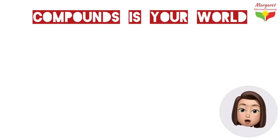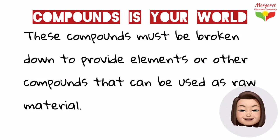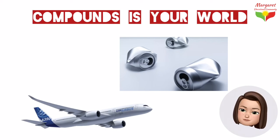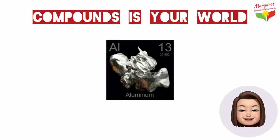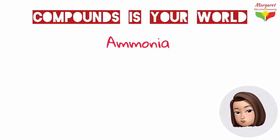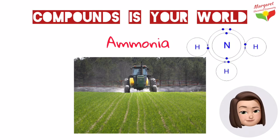Some compounds that are essential for our daily life are often not found in nature, so these compounds must be broken down to provide elements or other compounds that can be used as raw materials. For example, aluminium is used in cans and airplanes, but aluminium is not found alone in nature — to obtain aluminium, we have to break down the compound aluminium oxide. Ammonia is another important compound used in industry; it's used to make fertilizers and is made by combining the elements nitrogen and hydrogen.